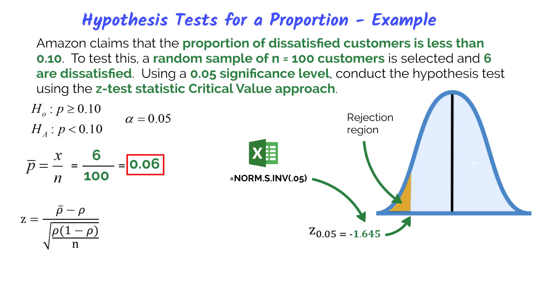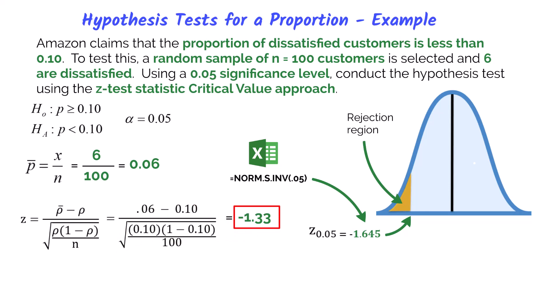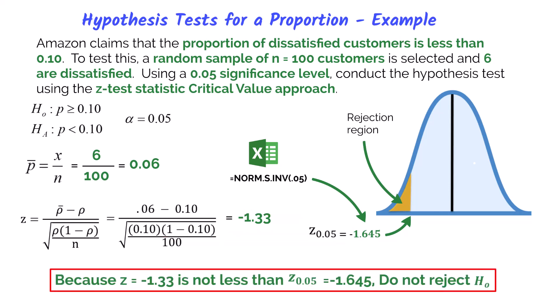Now we calculate the Z test statistic using the formula, with the sampling error in the numerator and the standard error for the sample proportion in the denominator. Plugging in p-bar, the hypothesized population proportion p, and sample size n, we get a Z test statistic of negative 1.33. Since negative 1.33 is not less than the critical value of negative 1.645, we do not reject the null hypothesis. Based on the sample data, Amazon does not have sufficient evidence to conclude that the proportion of dissatisfied customers is less than 10% at the 0.05 significance level.